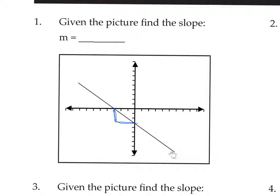Remember that when your line is going downhill — if it's your bank account, it makes you sad — this is a negative slope. So the slope for this line is going to be negative. The rise is vertical, three units high. The run is horizontal, three units long. So we have negative three over three, which simplifies to negative one. This is a slope of negative one.